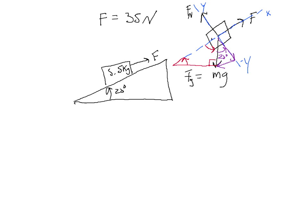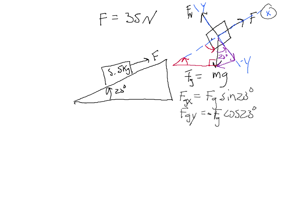Let's go ahead and write that down. FGx is equal to FG times the sine of 23 degrees. The y component of gravity will be in the negative y direction, so we put a minus sign there. The x component of FG is also in the negative x direction, because it's down the hill, and we've defined the positive x direction to be up the hill. So these are both negative.